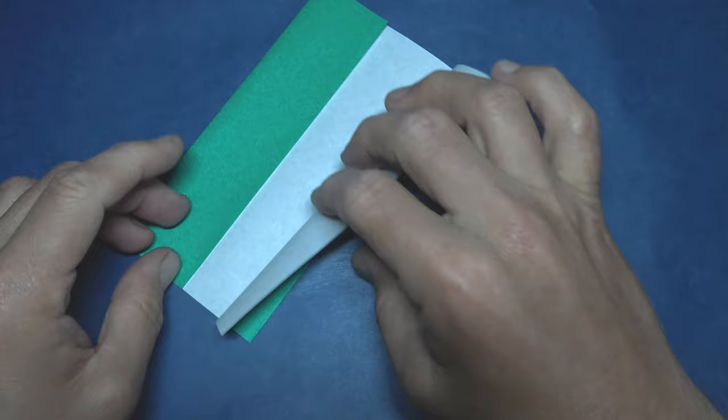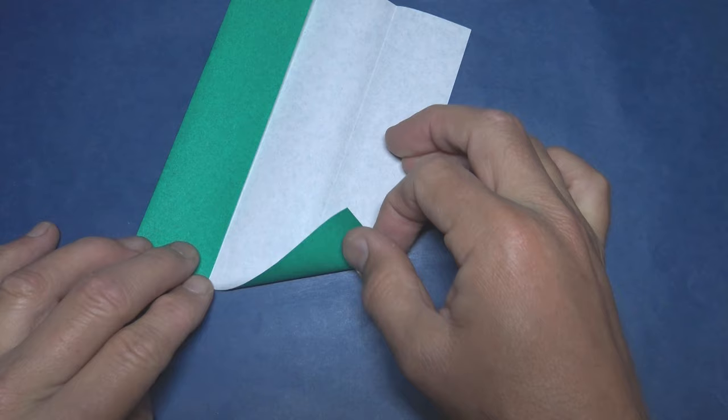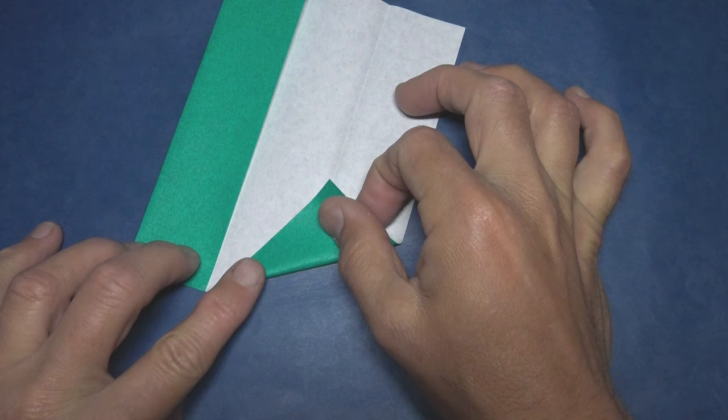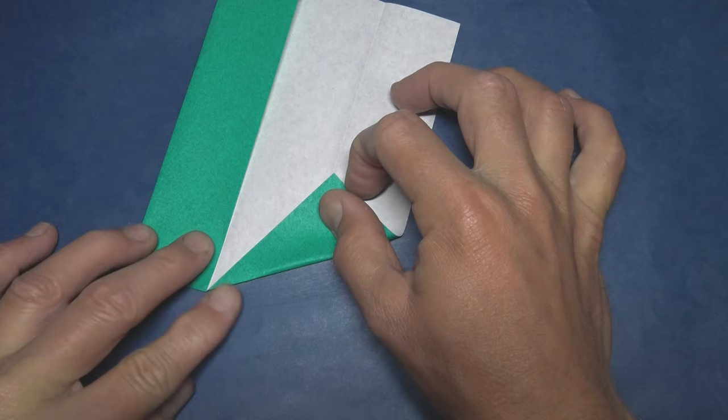And unfold. Now fold this corner up. We're folding on this point and we want the corner to land on the crease. Try to make this super exact.